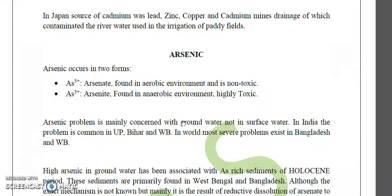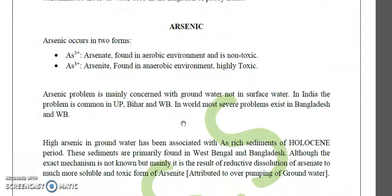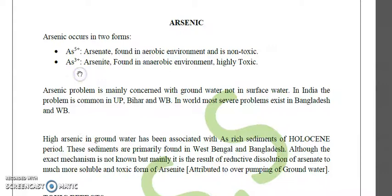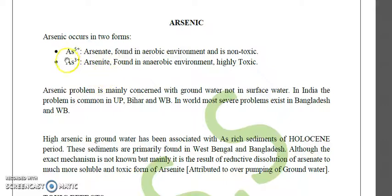Now let's discuss another very important heavy metal: arsenic. Arsenic occurs in two forms — arsenic three plus (As³⁺) and arsenic five plus (As⁵⁺). As³⁺ is known as arsenite and As⁵⁺ is known as arsenate.